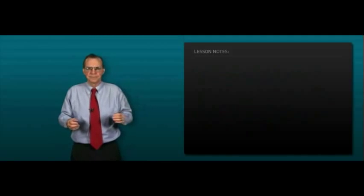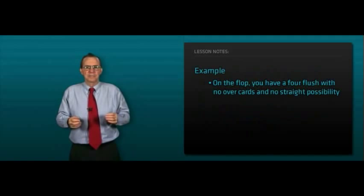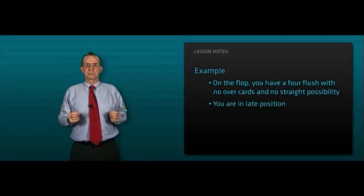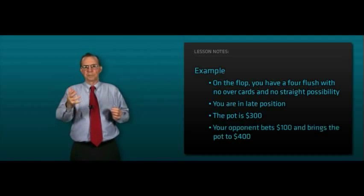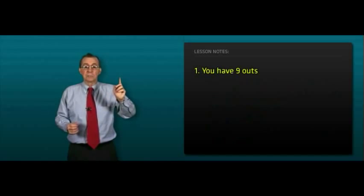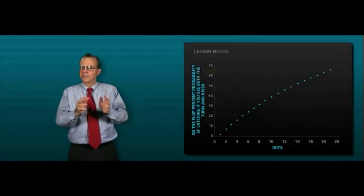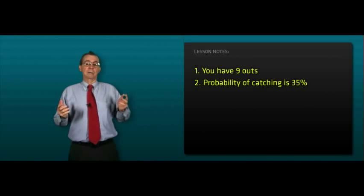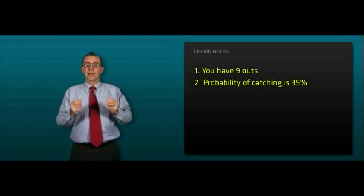Quick example. On the flop, you have a four flush with no over cards and no straight possibility. You're in late position. The pot is $300 and opponent bets $100 and brings the pot to $400. You have nine outs. From the flop graph, find out your probability of catching. Wow! With two cards to come, you have a 35% chance.